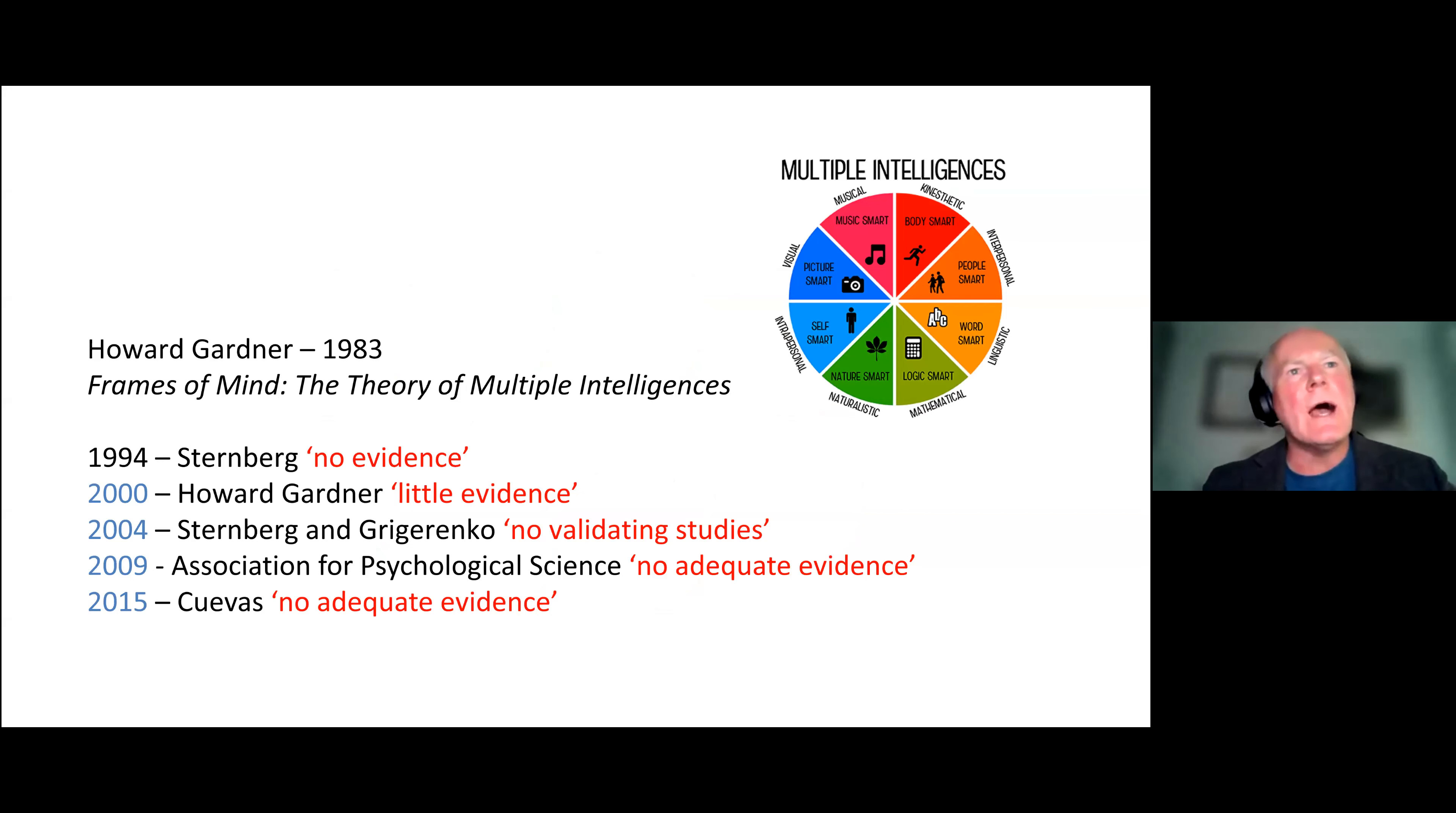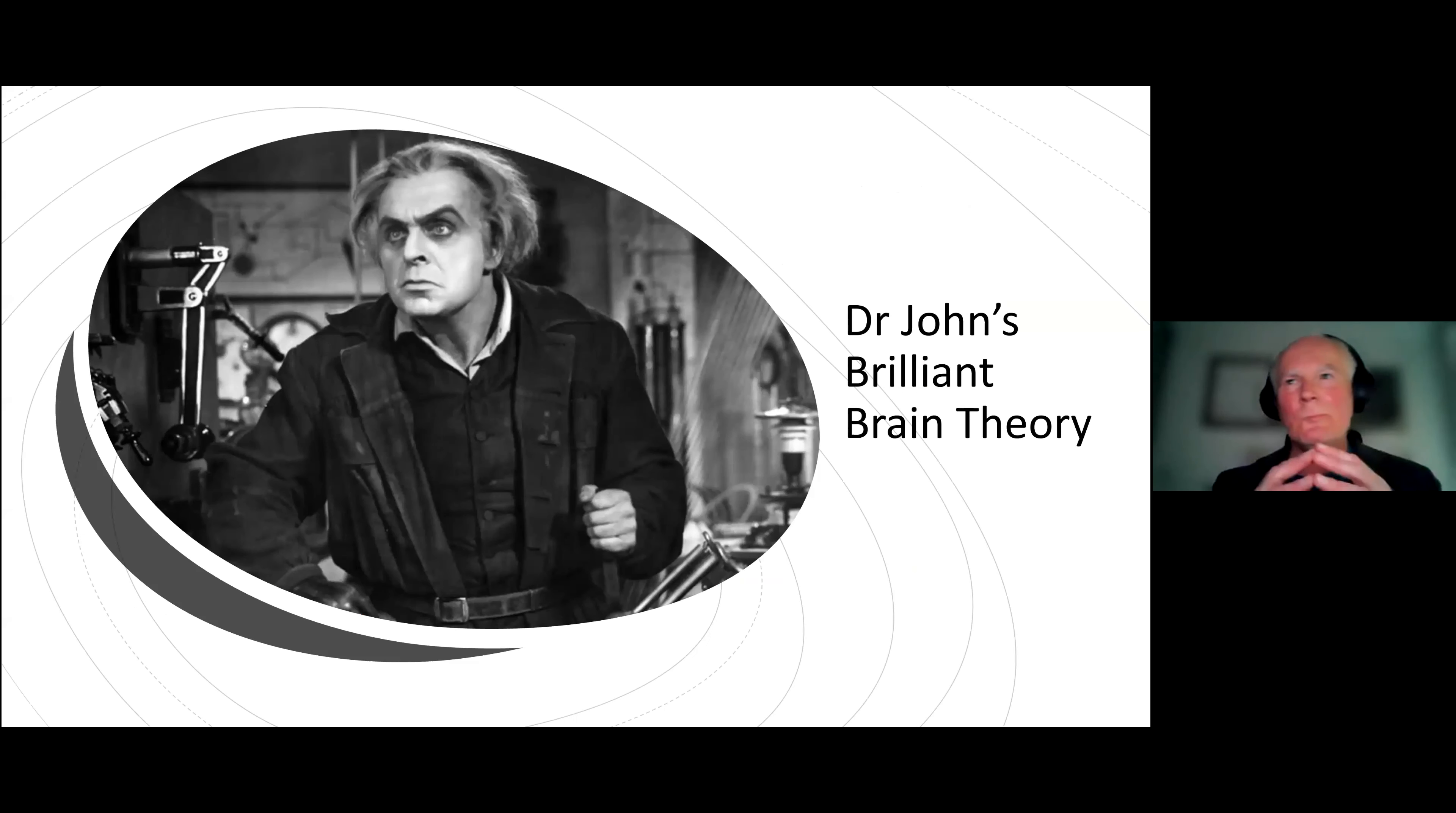This is controversial because this is still a very powerful, commonly widely accepted theory of education. But I want to step you through the kind of the research and refutation process to kind of explain how this happens and why we do get this disconnect between research and classroom practice. So, 1983, Howard Gardner comes up with Frames of Mind, the theory of multiple intelligences. 1994, 11 years later, another researcher, Sternberg, says no evidence. There is no evidence to support this. Interestingly enough, in the year 2000, Howard Gardner himself says there is little evidence. 2004, Sternberg and Grigorenko do a meta-analysis of all the studies and say there's no validating study. 2009, the Association for Psychological Science, there's no adequate evidence. 2015, Cuevas, there's no adequate evidence. So why? Why does the theory of multiple intelligences and a lot of these other theories, why do they persist even long after they have actually, the theories have been refuted and proved wrong?